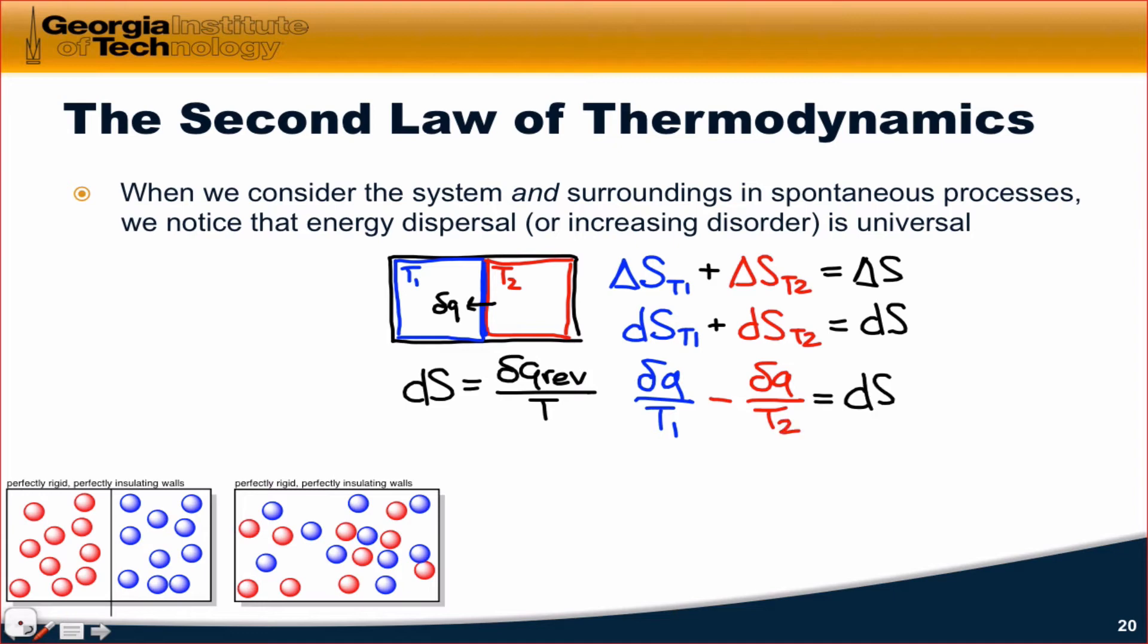It may look at first glance like this difference is going to come out to be zero. But remember, T2 is infinitesimally bigger than T1. That means we're looking at a difference between a larger term and a smaller term. That means dS must be greater than zero.